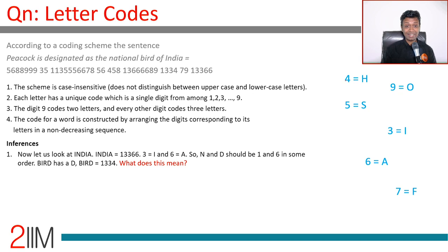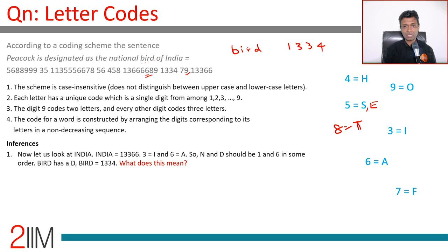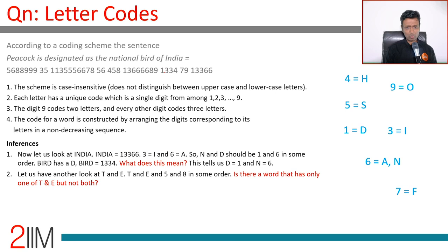O and F: nine is O because there is no seven in 'national.' Seven is F. From 'the': H is four, T is eight, E is five. With these deductions established, we now look at 'bird' coded as one, three, three, four. I is three, so that accounts for one three. B, D, and R correspond to one, three, four.